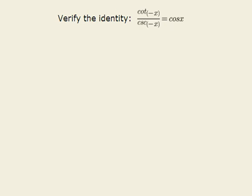In the following problem, we are asked to verify the identity: cot(-x) / csc(-x) = cos(x).